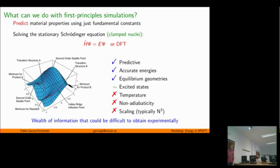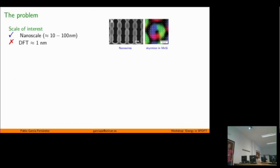DFT gives us a lot of information that is difficult to get from experiment, so it's very useful to complement experiments. But where do we find limitations? Essentially when we go to the nanoscale — since most DFT calculations work on the one-nanometer scale — that is where we hit the limit for cell size in DFT. When we try to simulate larger scales, we run into problems.